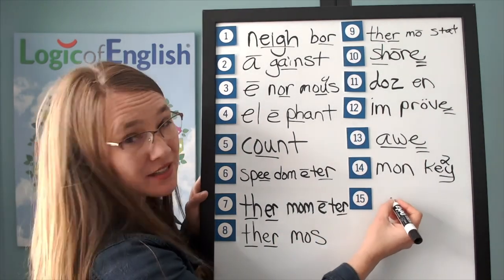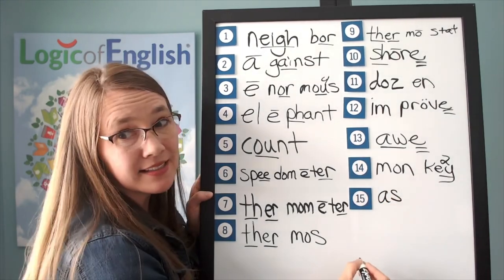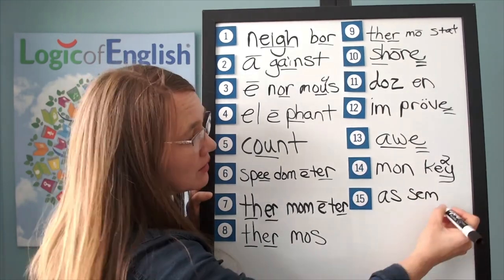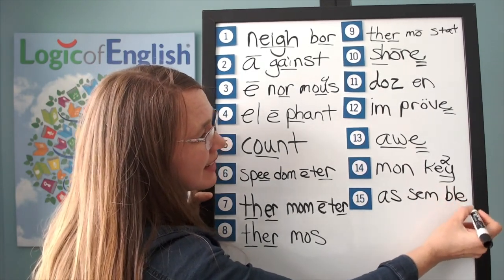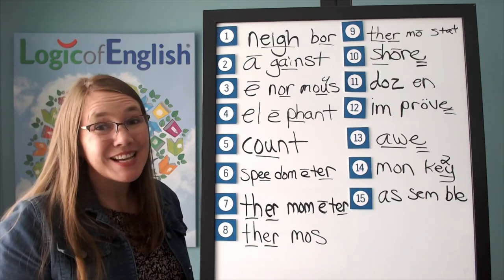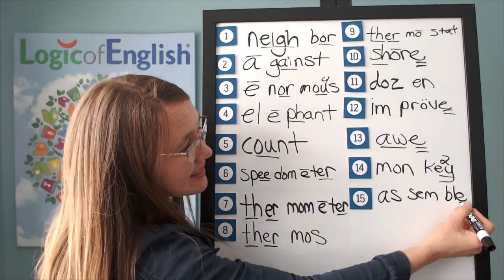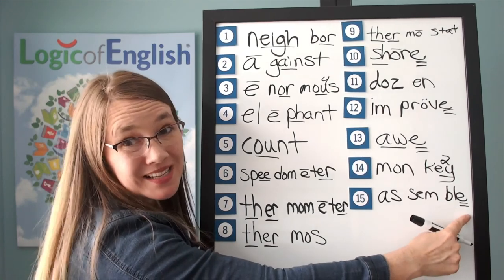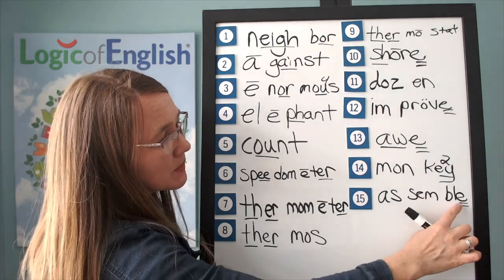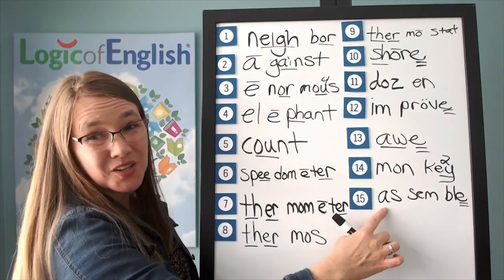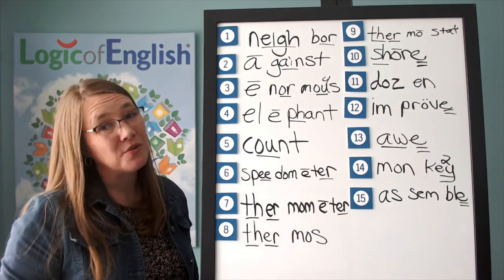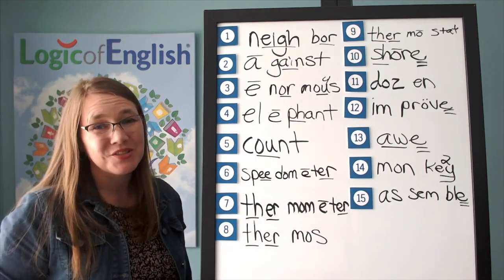Help me to write it: first syllable AS; second syllable SEM — S, E, M; third syllable BULL, silent final E. Why do we have a silent final E in ASSEMBLE? Every syllable must have a vowel. ASSEMBLE. Any vowel may say uh or ih in an unstressed syllable.